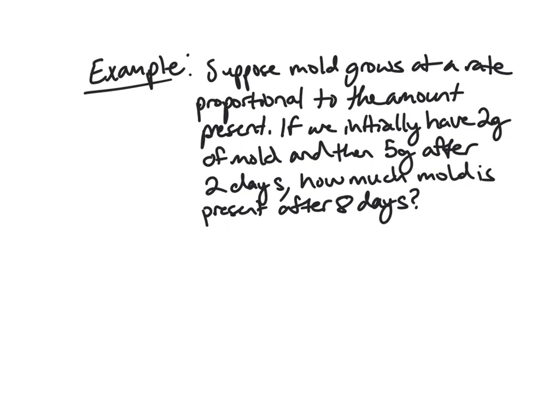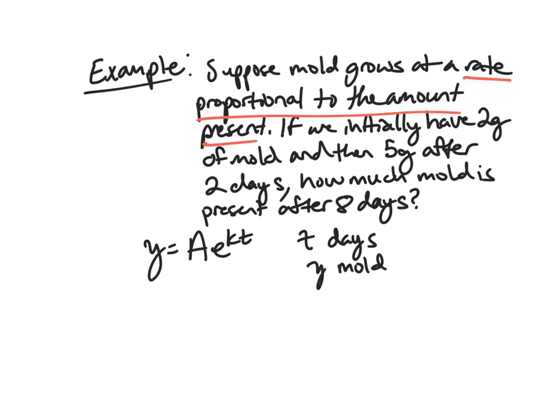So let's look at an example here. So suppose we have some mold, because everyone likes to talk about mold, growing at a rate proportional to the amount present. So again, seeing this phrase should make you immediately think this is an exponential growth or decay problem. So initially here, we have two grams of mold, and two days later, we have five grams, and we want to know how much is there after eight days. So we want to model this. So we want to immediately be thinking, this is what I'm talking about, y equals Ae to the kt, where t here is going to be in days. And y is the amount of mold in grams. And so we just need to solve. So we want to find what y is when t is eight.